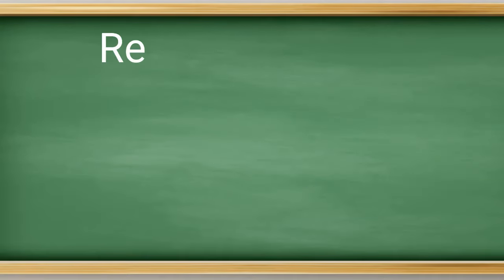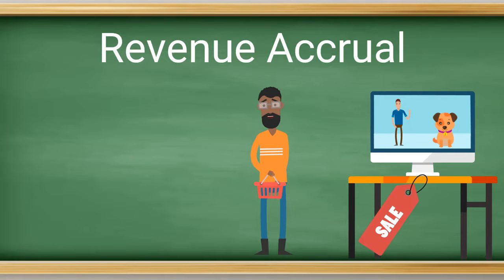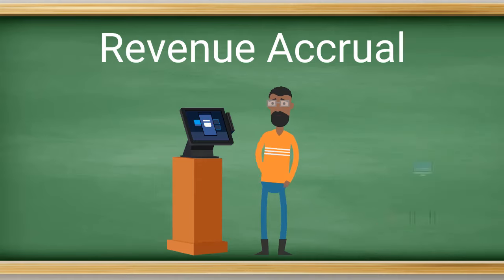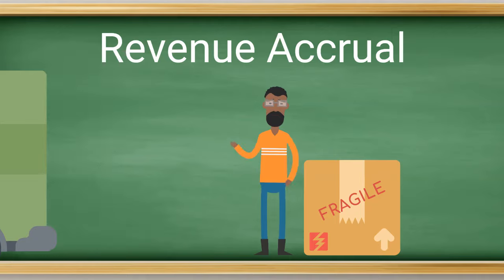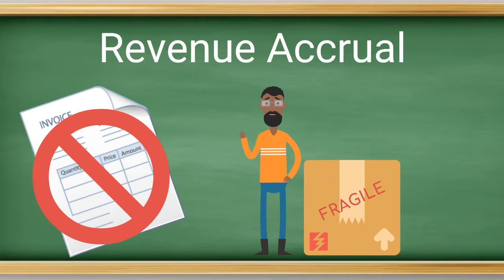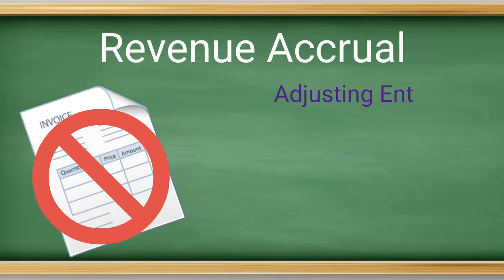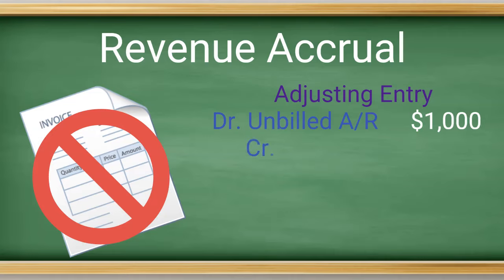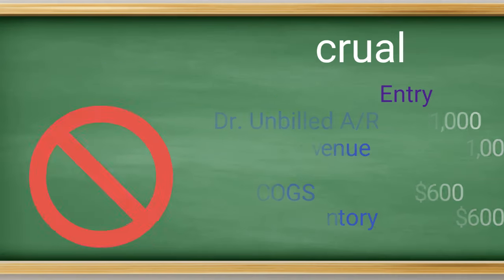Our last example is an accrual for revenue — this is for revenue you have earned but have not collected or billed at month end. Let's keep it simple with the sale of a computer that was earned upon shipment. You shipped it on the last day of the month but you have not billed for the transaction. Therefore, you must accrue for the earned revenue. In this example, let's say it was $1,000 again and an inventory value of $600. You would book the following adjusting entries: a debit to unbilled accounts receivable for $1,000 and a credit to revenue. The other entry is a debit to cost of goods sold for $600 and a credit to inventory.